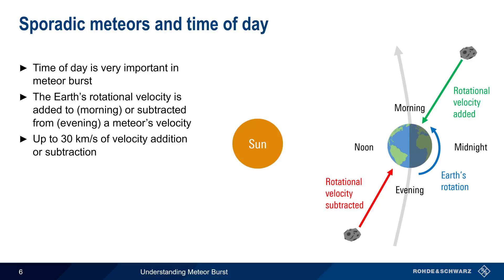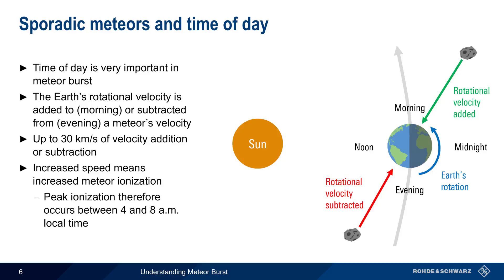As mentioned earlier, higher speed means higher ionization, and peak meteor burst ionization therefore occurs in the morning, typically between 4 and 8 a.m. local time.